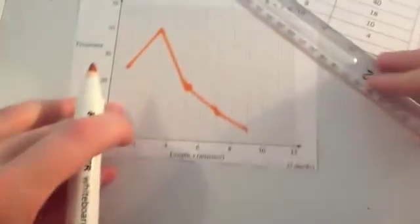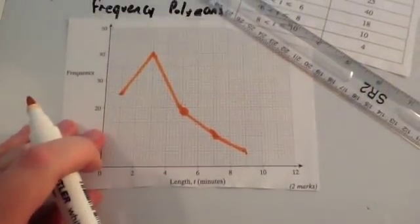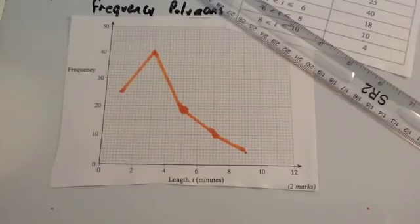Try and do this with pencil as accurately as you can. It's a bit harder with marker. And so there you go, that's the frequency polygon that's been drawn. So that's the first part of the question. Now we've drawn our frequency polygon.